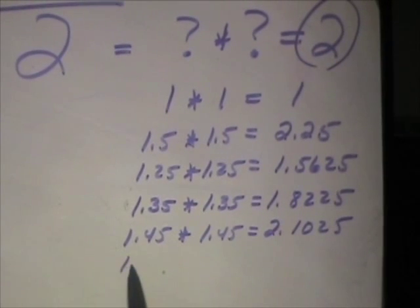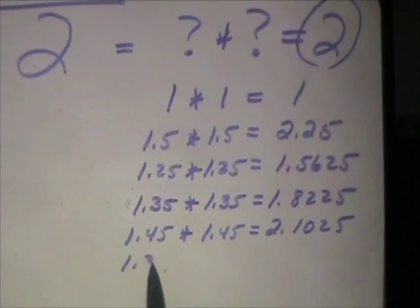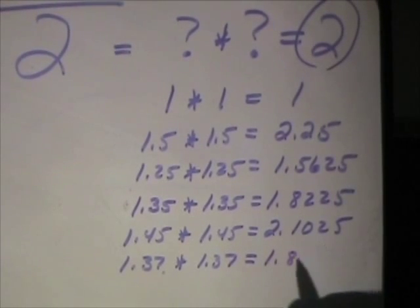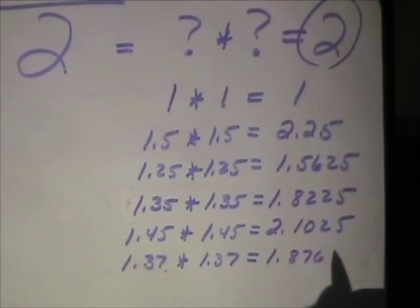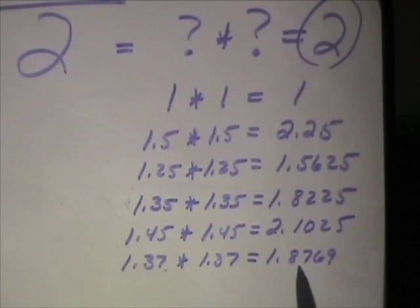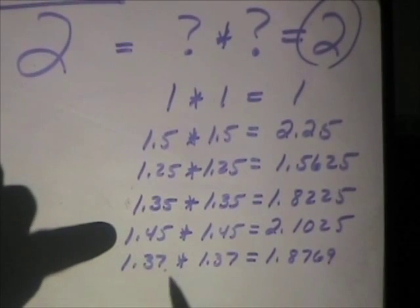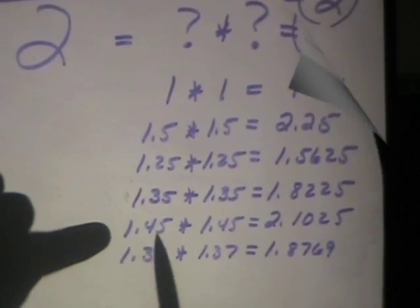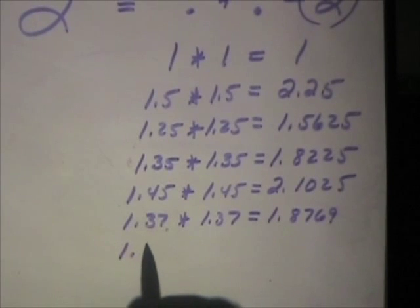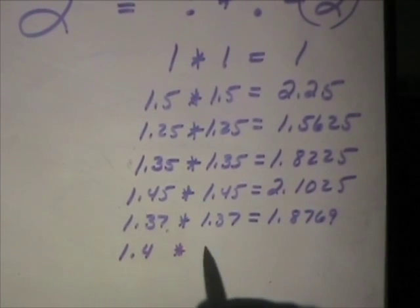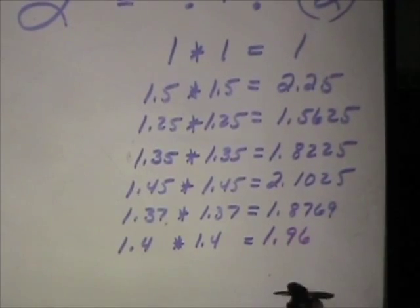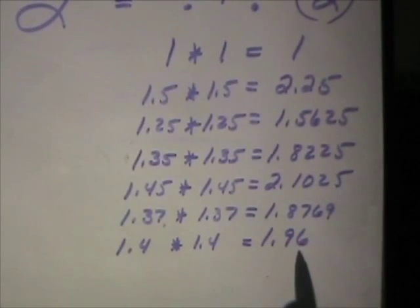Jesse? 1.37. Okay. 1.37 times 1.37. 1.8769. Alright, so we're getting there. We are so getting there. Okay, I need something between these two, between 7 hundredths and 45 hundredths. 1.4 times 1.4. Excellent. 1.96. Oh, how far are you? We're only 4 hundredths away.